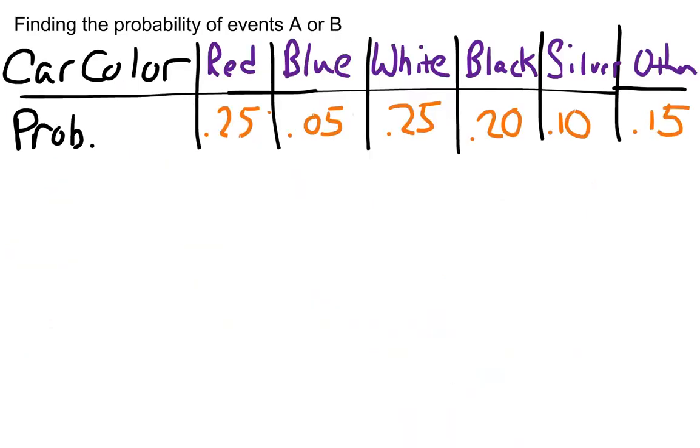Suppose we wish to find the probability of events A or B. We're given a table of information that shows various car colors and the probability of each color. For example, let's assume that we're looking at cars on a car lot, and the probability distribution of the different colors of cars on a lot is as follows: 25% of the cars are red,